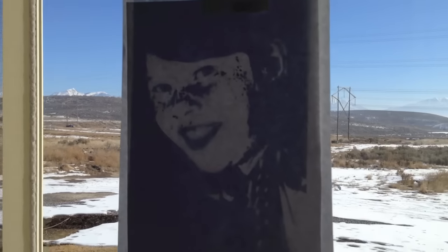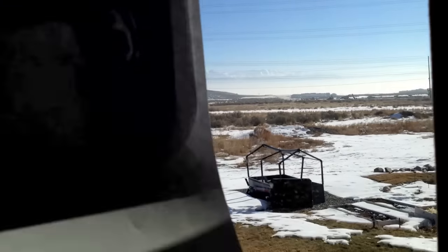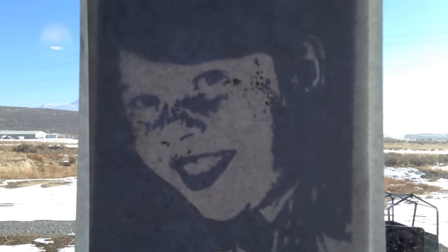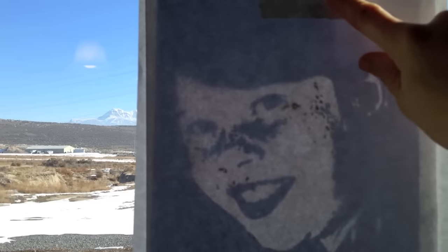This is one of my favorite methods. If you don't have a light table, you can just place your printed image on the window and then press the paper that you're trying to trace onto over it and then trace it that way.